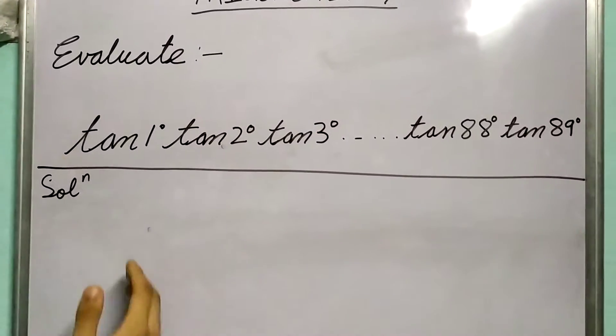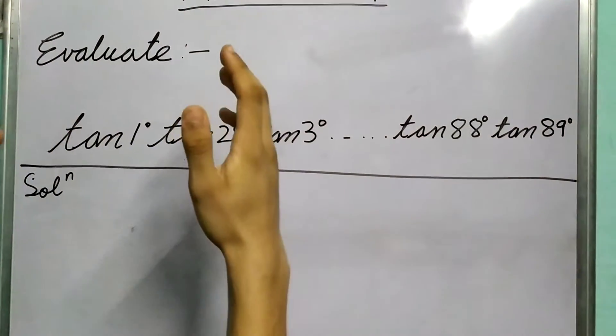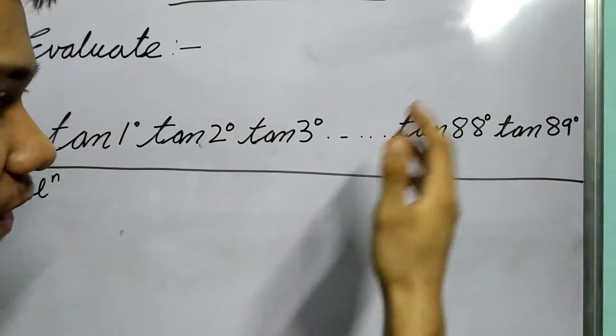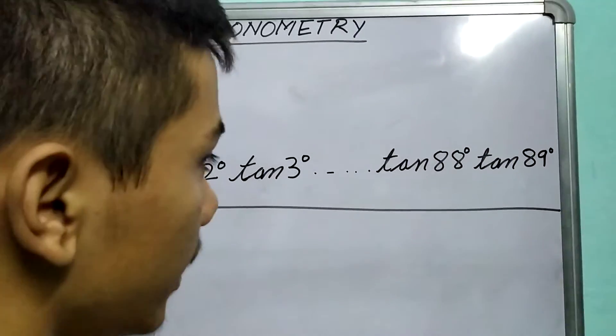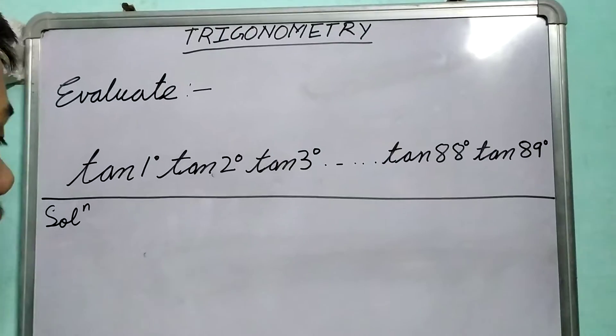So let me just read it out. We have tan 1° · tan 2° · tan 3° · tan 4° · tan 5° · tan 6° and so on till tan 88° · tan 89°.